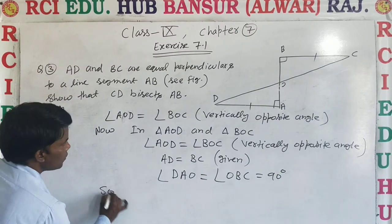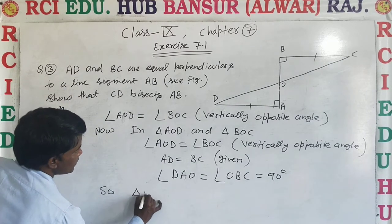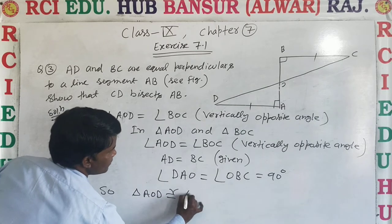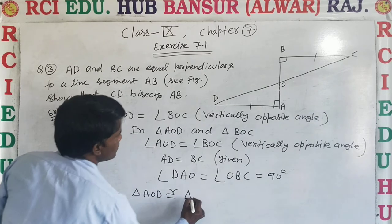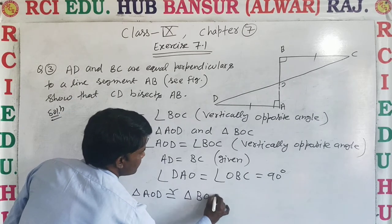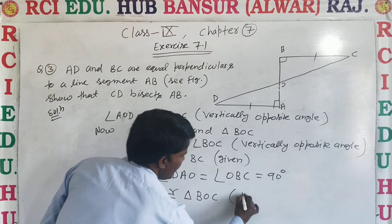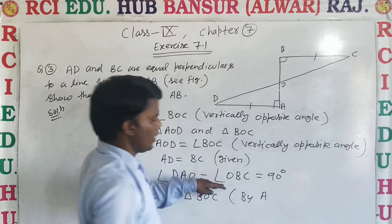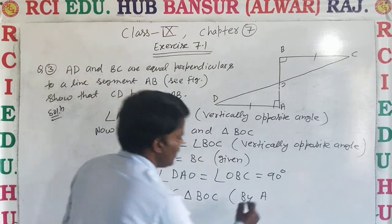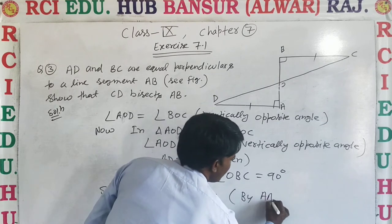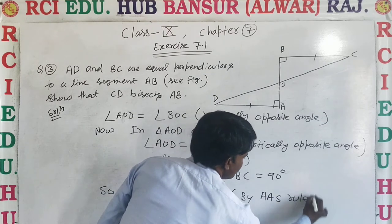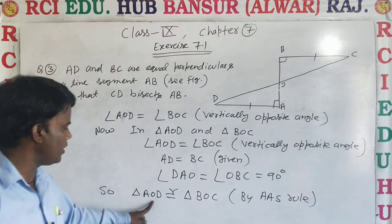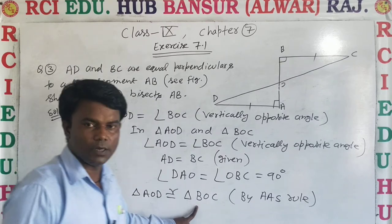Therefore, triangle AOD is congruent to triangle BOC by AAS rule — that is, two angles and one side.